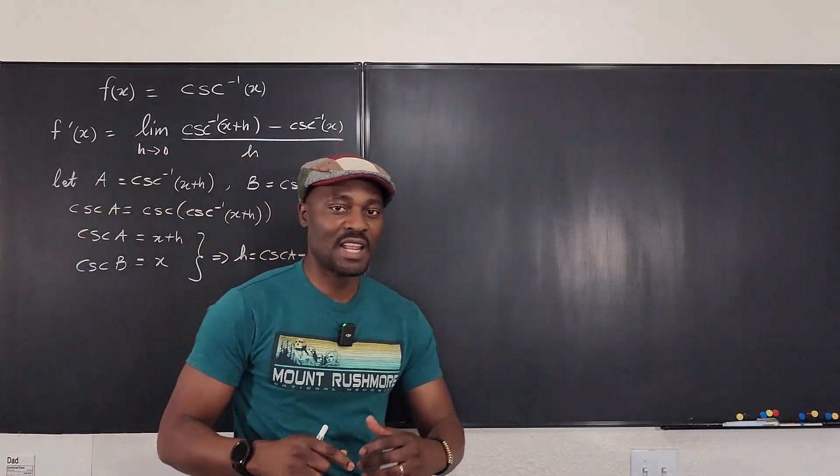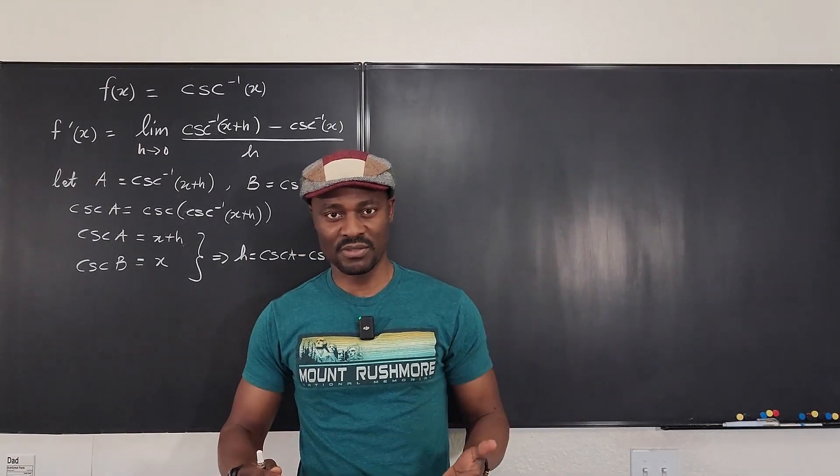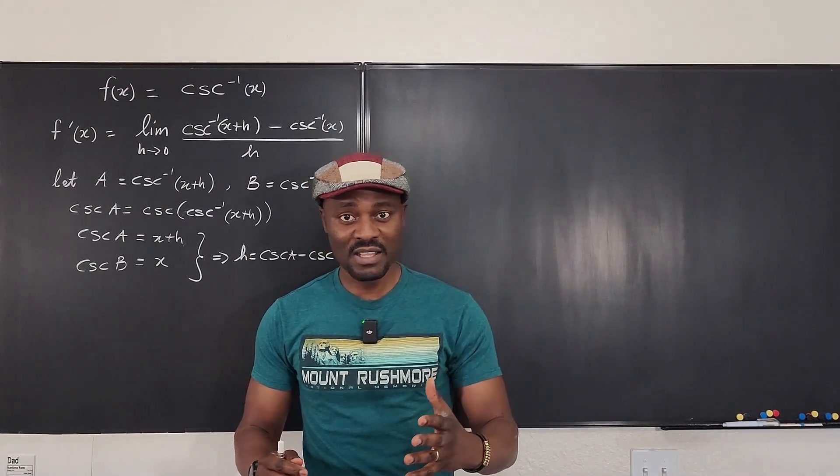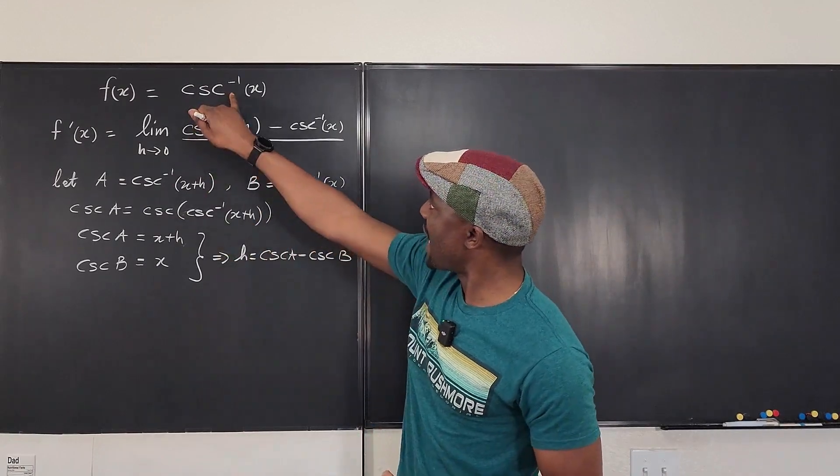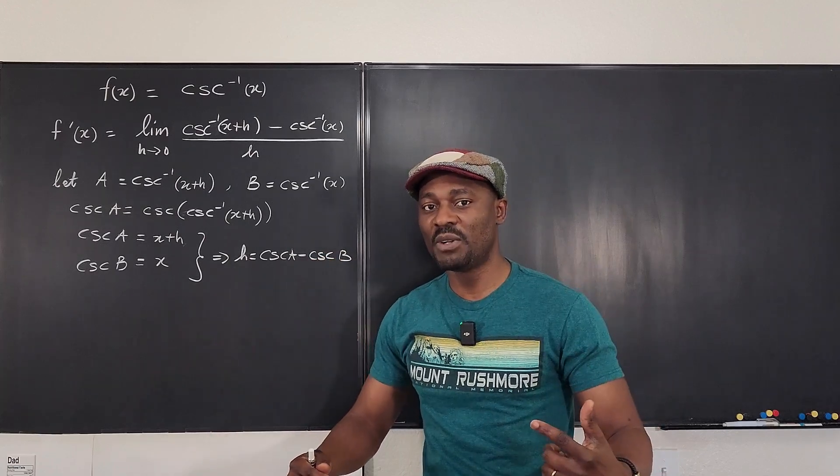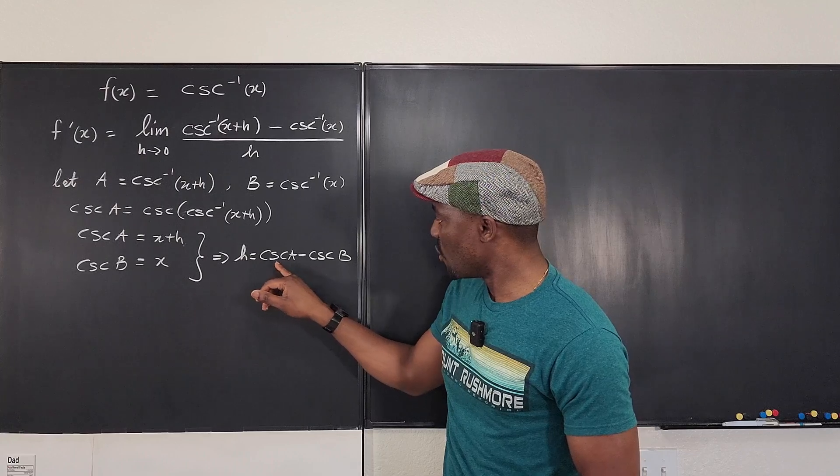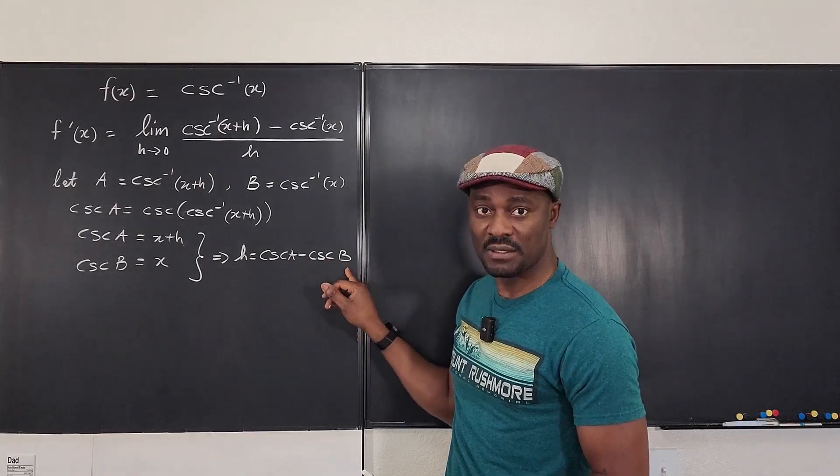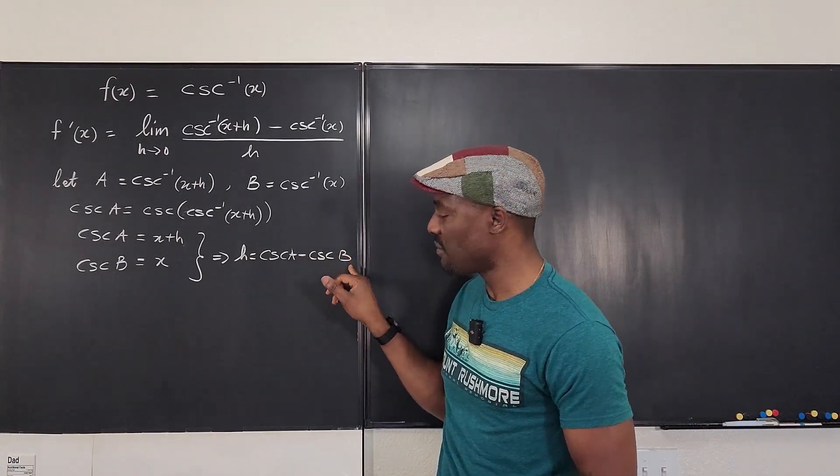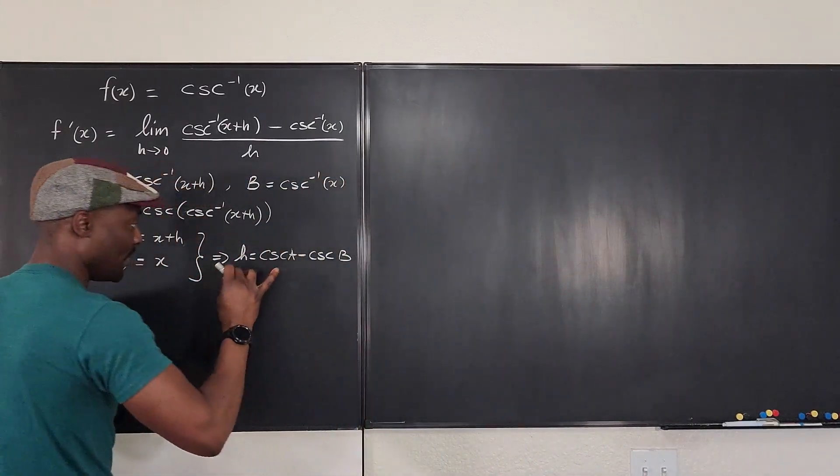And based on what I've explained, the inverse trig functions are one-to-one functions. Which means the fact that it's an inverse means it's a one-to-one function because for a function to be invertible, it has to be one-to-one, which simply means that if cosecant a becomes cosecant b, it simply means a becomes b.